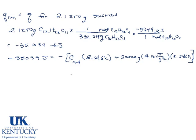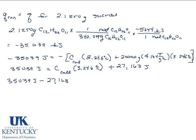That'll give me 35,039 joules is equal to C of the calorimeter times 3.246 degrees Celsius, plus, when you multiply all this out, you have 27,163 joules. So we will subtract 27,163 from this side. So that would be 35,039 joules minus 27,163 joules.